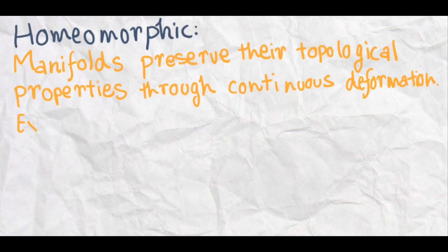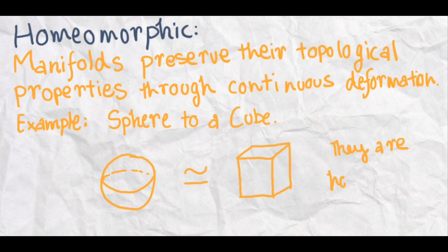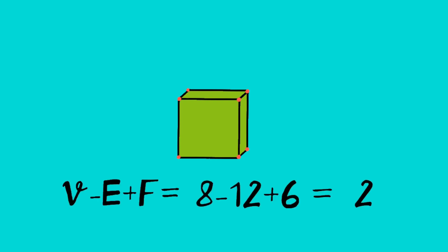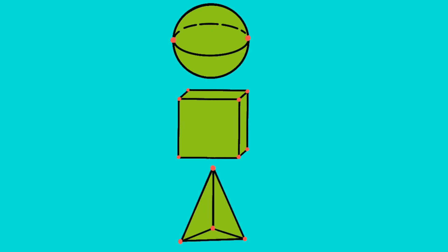Manifolds that preserve their topological properties through continuous deformations are known as homeomorphic. Since these shapes are homeomorphic, they have the same Euler characteristic of two. Even a tetrahedron is homeomorphic to a sphere and a cube, and has the same characteristic.